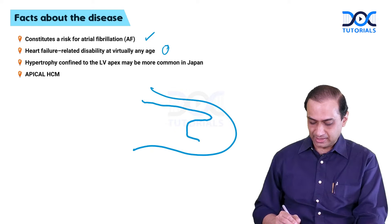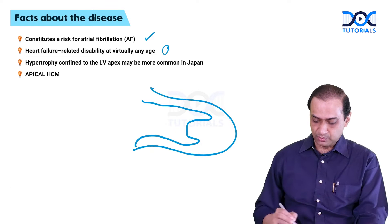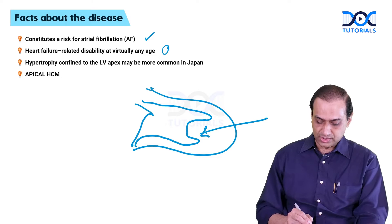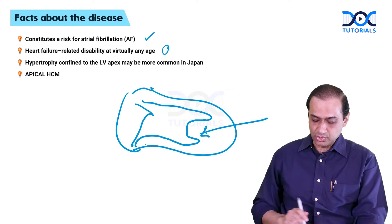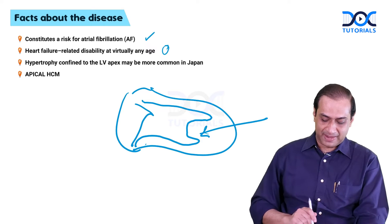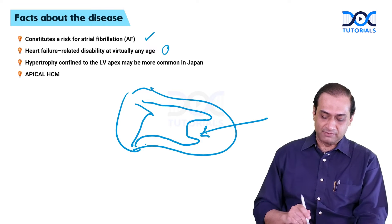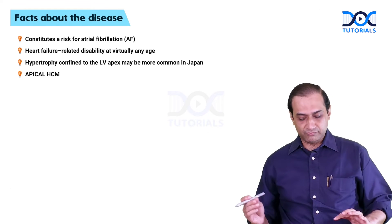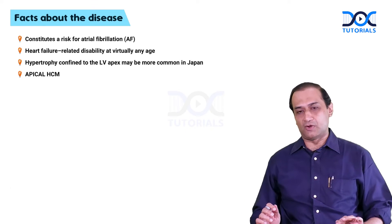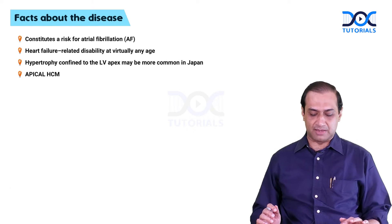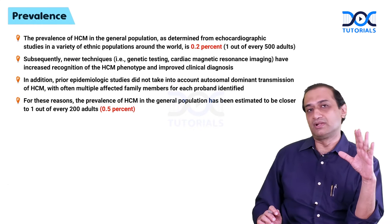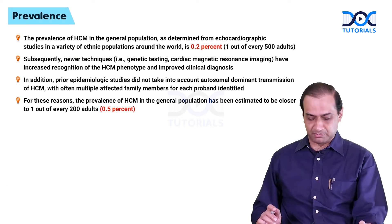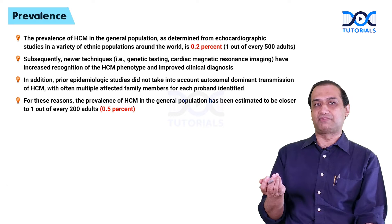The apical variant involves primarily only the LV apex being hypertrophied, and this is usually found in Japan. The apical variant has a better prognosis overall, with very minimal obstruction, though some cases can have obstruction at the level of the mid-cavity or apical obliteration producing some amount of gradient.